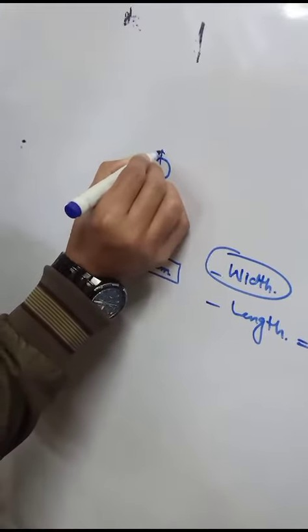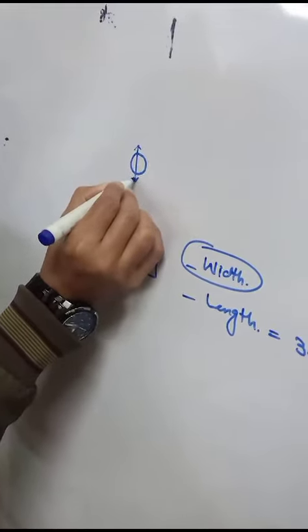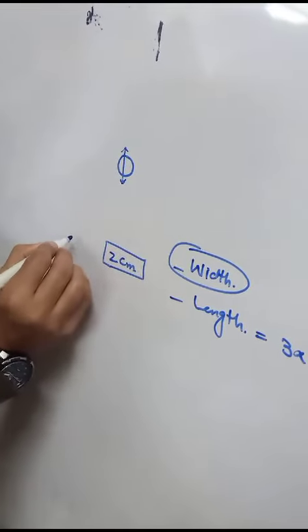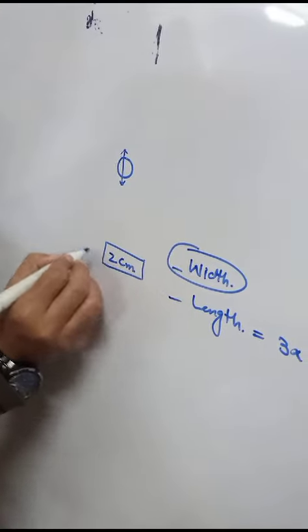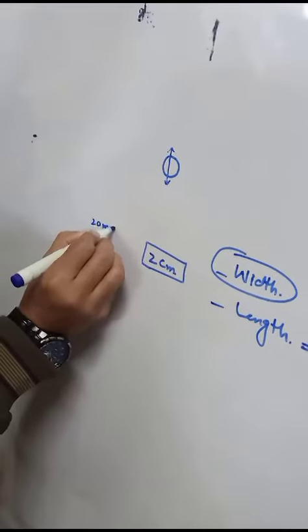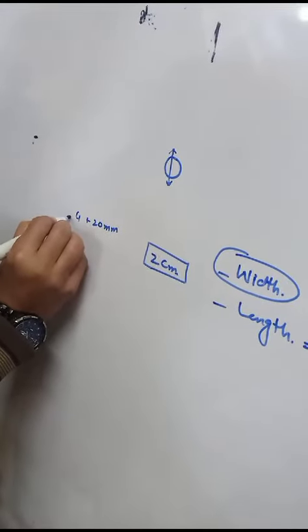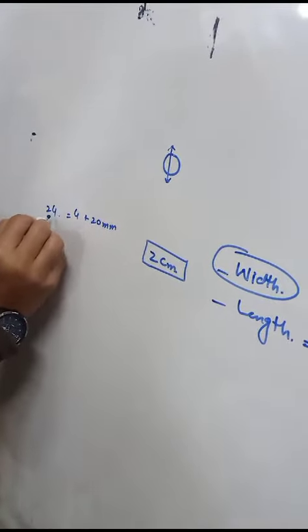This is two centimeters and two millimeter and four millimeter. This will be 20 millimeter, 20 millimeter plus four millimeter is equal to 24 millimeter.